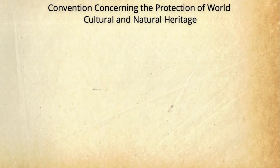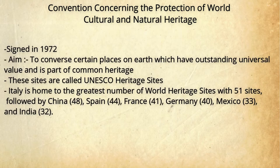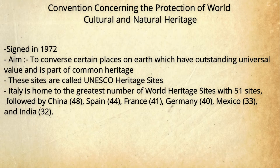Next is the Convention on the Protection of World Cultural and Natural Heritage, signed in the year 1972. The basic objective of this convention was to protect and maintain certain places on earth which have universal or cultural values that need to be conserved. This includes various protected sites known as UNESCO World Heritage Sites, such as the Taj Mahal, Hampi, Ajanta Caves, and Agra Fort.